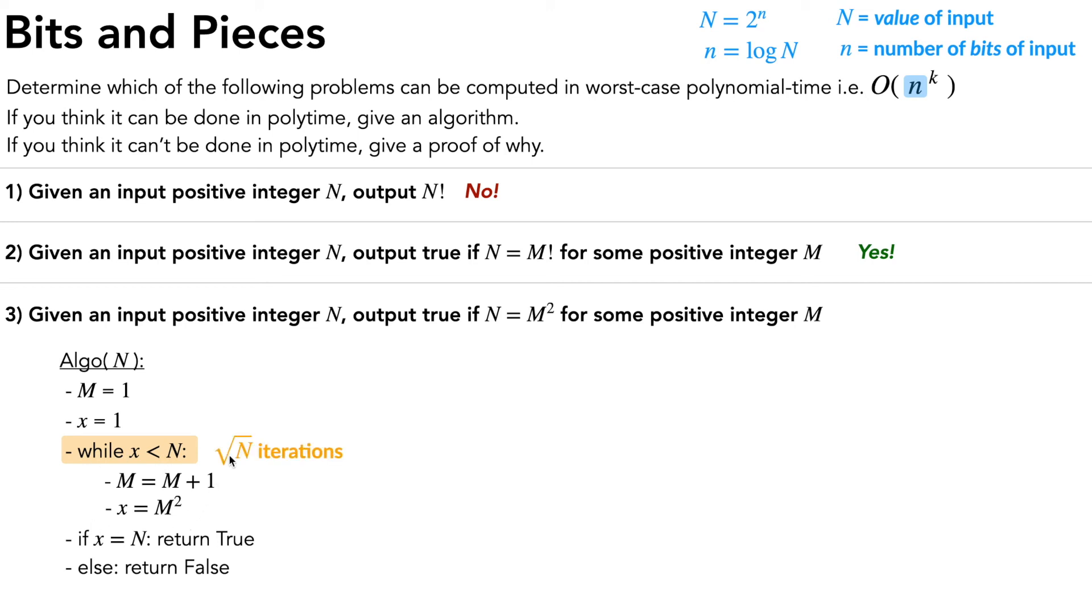So how many iterations is this going to take? Well, it's going to take root of big N iterations. And this is pretty bad, because when we plug in the relationship between big N and little n, this would end up with exponential time in terms of little n.